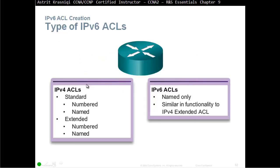Here is a comparison of IPv4 and IPv6 Access Control Lists. In IPv4 ACLs we had Standard and Extended — Standard could be numbered or named, and Extended could be numbered or named as well. In IPv6 Access Control Lists they are only named, so we don't have any numbered. And they are all similar to Extended, so in IPv6 we have Extended named only — no numbered, no standard.